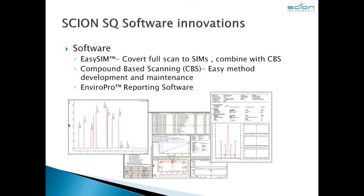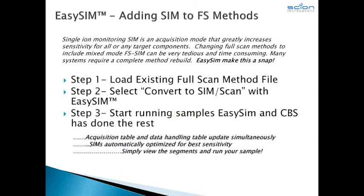And finally, EnviroPro reporting software allows generation of all standard EPA reports. In recent years, EPA methods have started allowing the use of single-ion monitoring or multiple-ion monitoring — SIM or MIM — to increase sensitivity for certain compounds. To incorporate this scan mode into an existing full-scan method is tedious and often requires starting over from a blank page. With Easy-SIM, it's now three simple steps: open an existing full-scan method, select Convert to SIM Scan, select the compounds and ions from the database, then load and go. A complete method can be converted in minutes, not hours. Since Easy-SIM is powered by CBS, you build the processing table at the same time. CBS also automatically optimizes the dwell time spent on each ion, ensuring maximum sensitivity and data integrity.